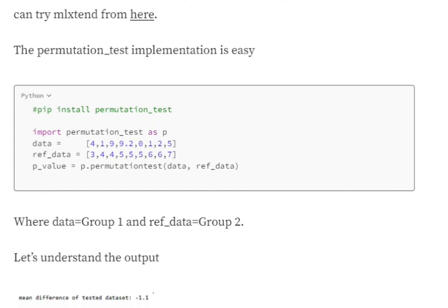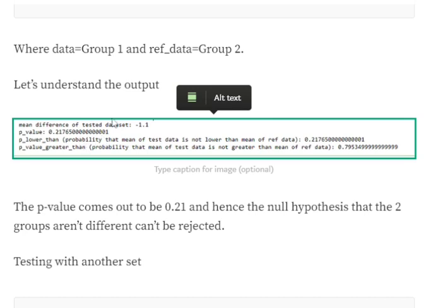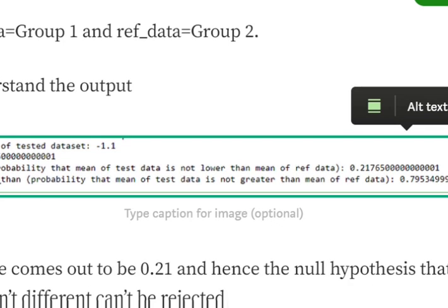We first pip-install the permutation_test library, then call p.permutation_test passing the two lists as parameters. Looking at the output, the most important value is the p-value — here it is 0.21. Since the significance level is 0.05 and the p-value of 0.21 is much greater than that, the null hypothesis cannot be rejected.